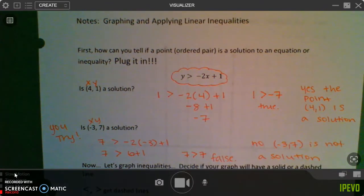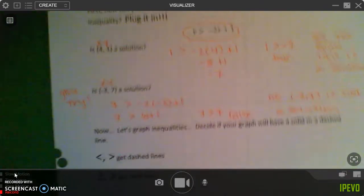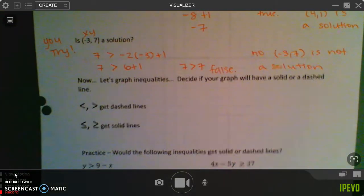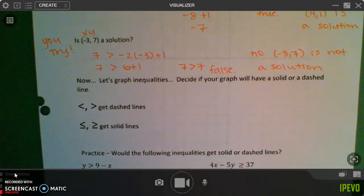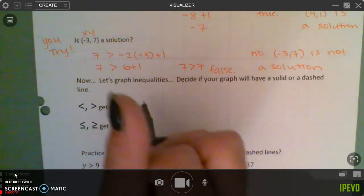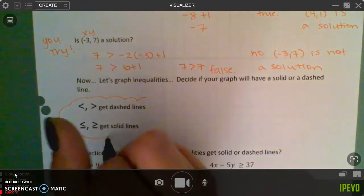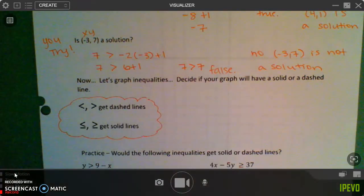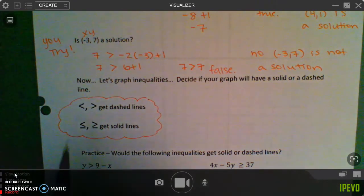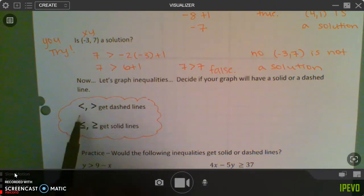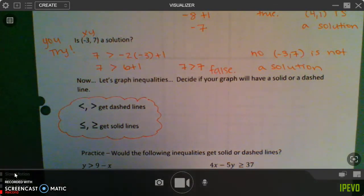So that's how you check to see if it's a solution or not. Then we're going to go down here where you're actually going to start graphing. So in order to graph an inequality, we need to know if it's going to be a dashed line or a solid line. If there is just the inequality symbol with no little line, it's dashed. If it has the little line, that means it's going to be a solid line.